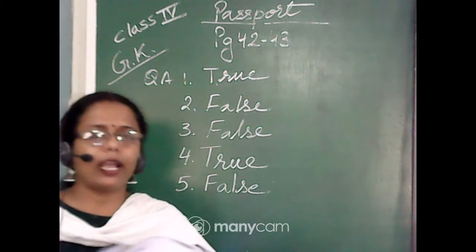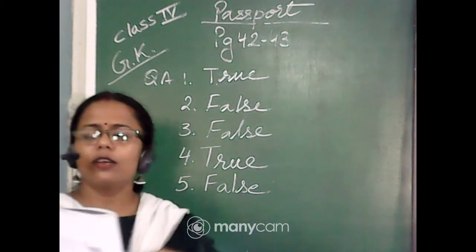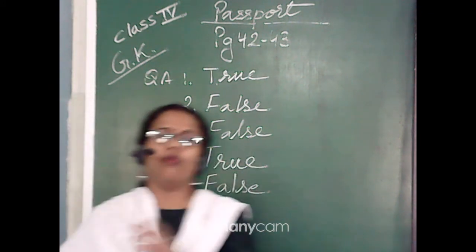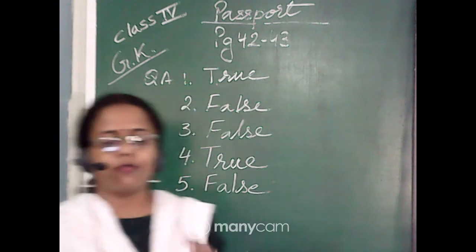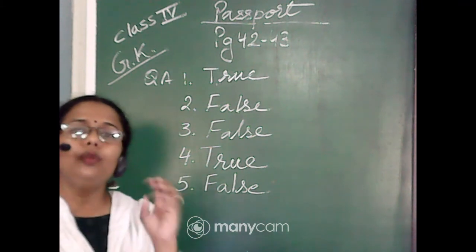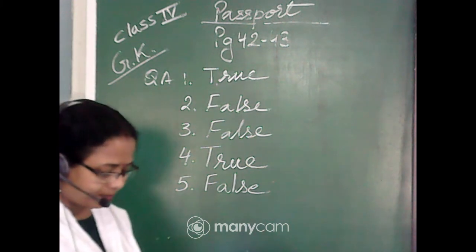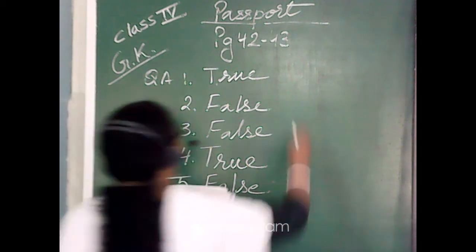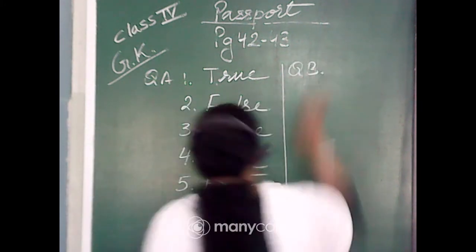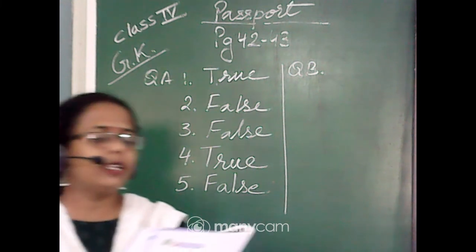Now we will go to question B: Match these documents commonly used as identity cards with their short descriptions. These are a few more identity cards which prove that you are a citizen of this country. We will learn the names of these documents today.